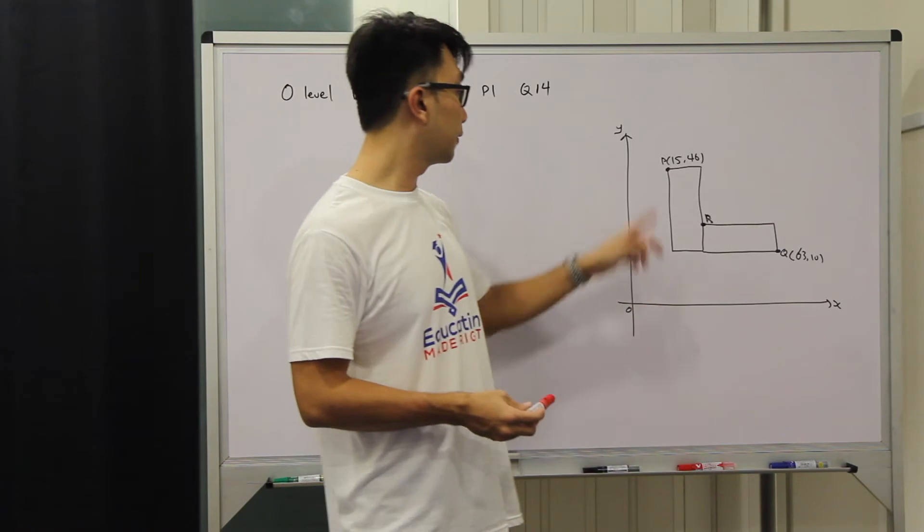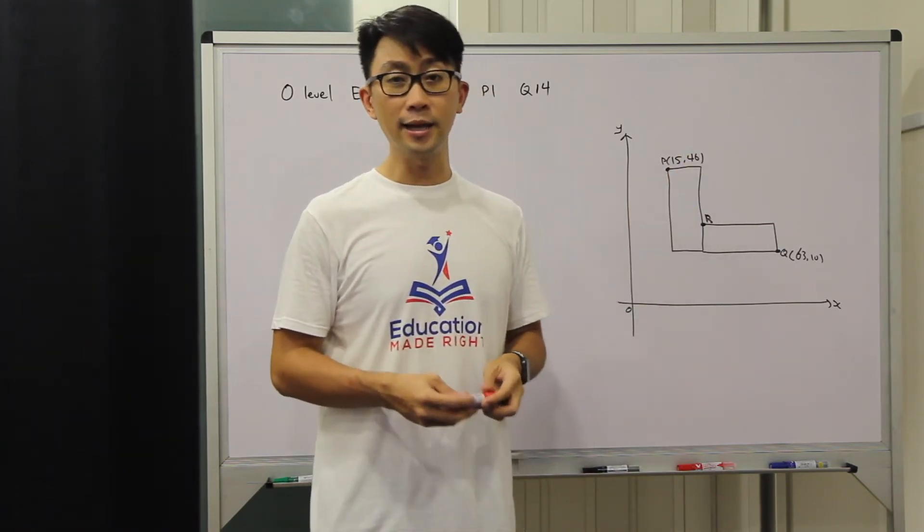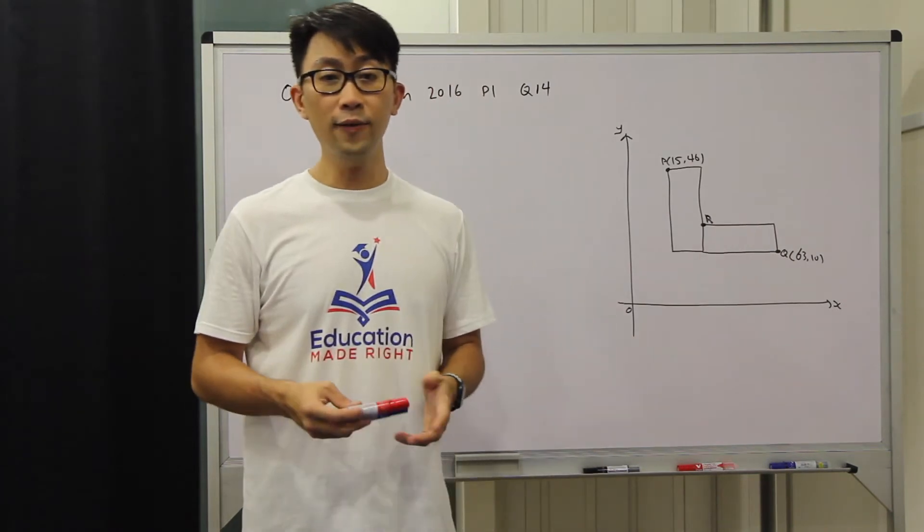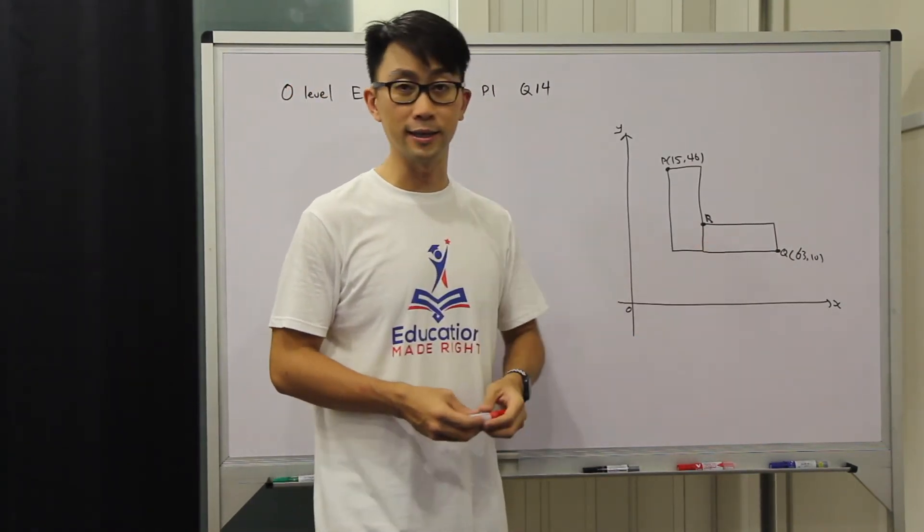Point P has a coordinate of (15, 46) and Q has a coordinate of (63, 10). Find the coordinates of R, whereby R is here.